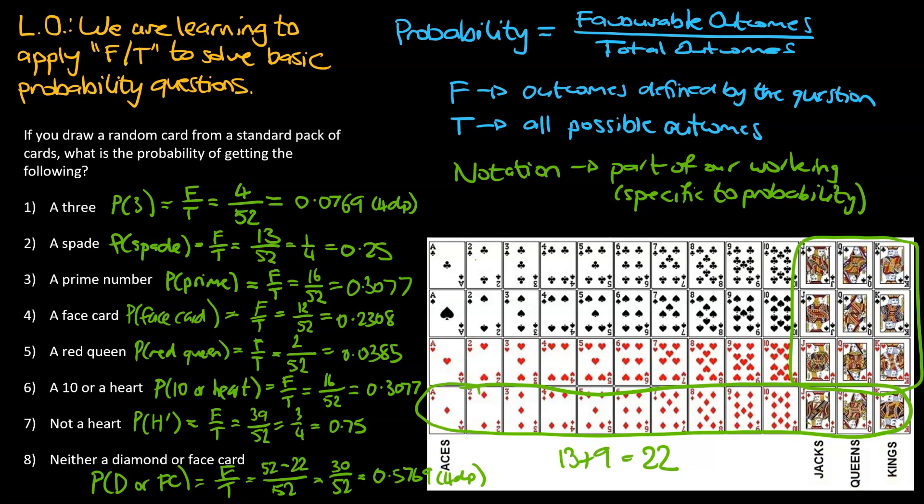So guys, hopefully you found the video on learning to use the F over T approach useful. And hopefully you also learned a bit about the pack of cards and how they're set out as well. So if you haven't already, make sure you get down the notes from today's video. Understand how the formula works. Understand what F is. Understand what T is. Understand how to do your notations. And finally, understand how to apply the basic probability questions. All right, let's go.